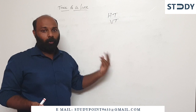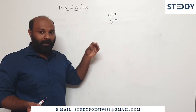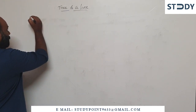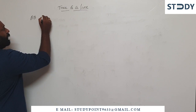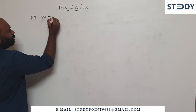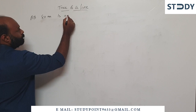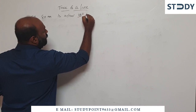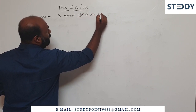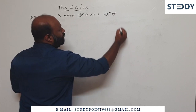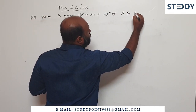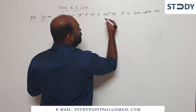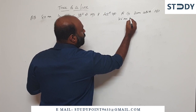So we can locate these two traces. In our previous class we chose another example: line AB, inclined at 30 degrees to HP and 45 degrees to VP.